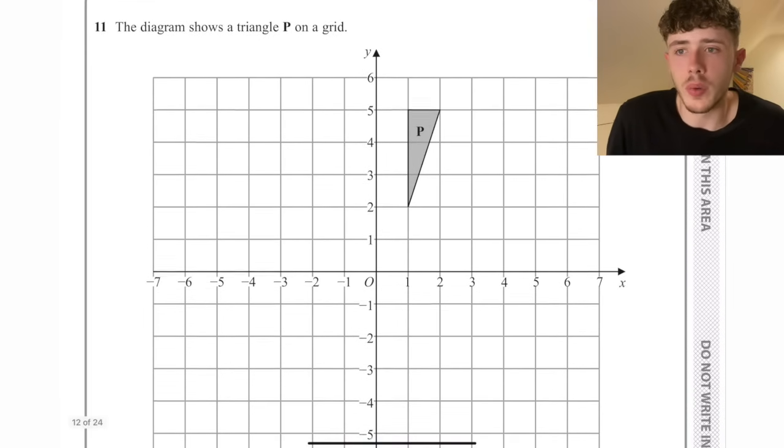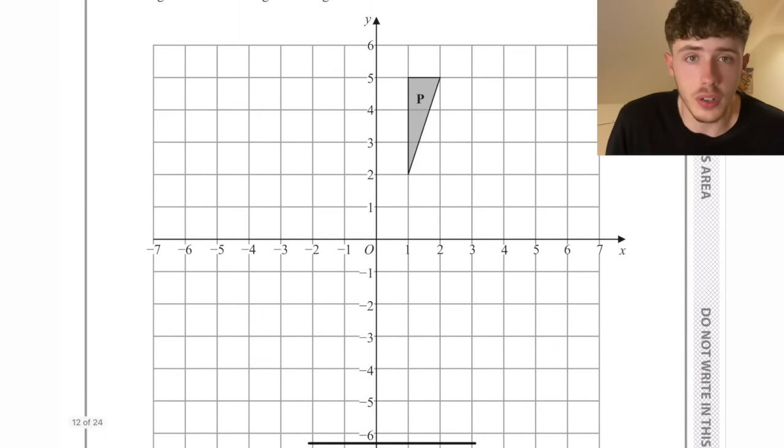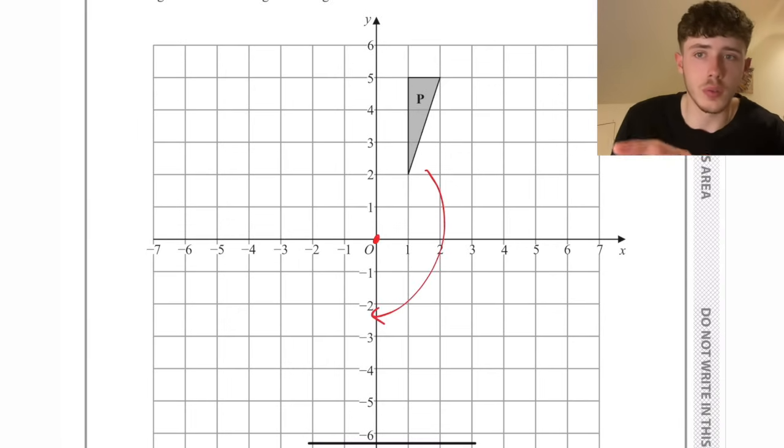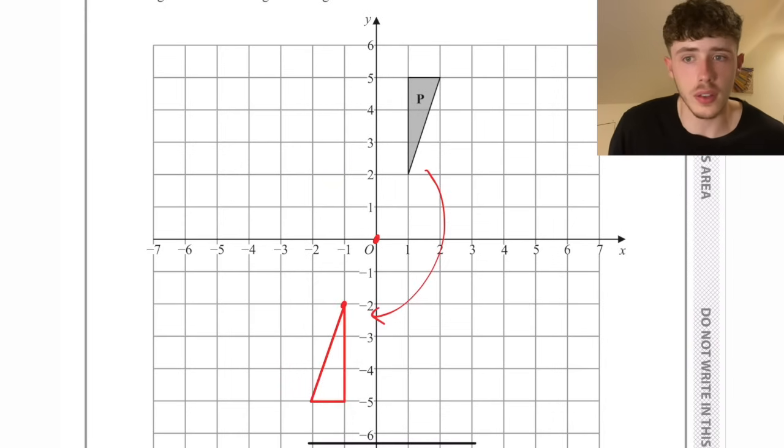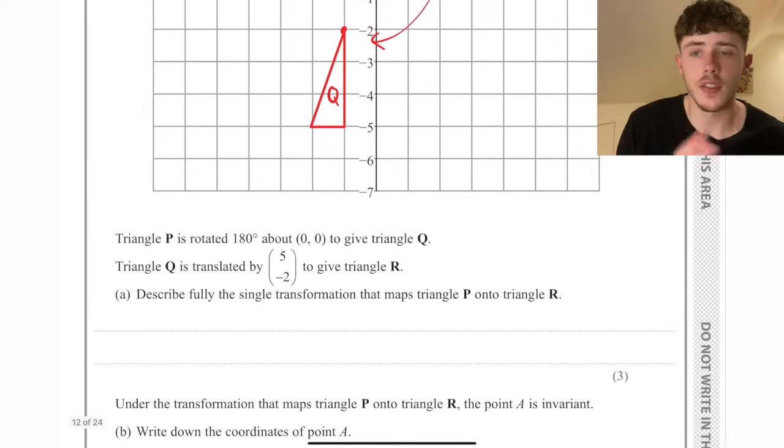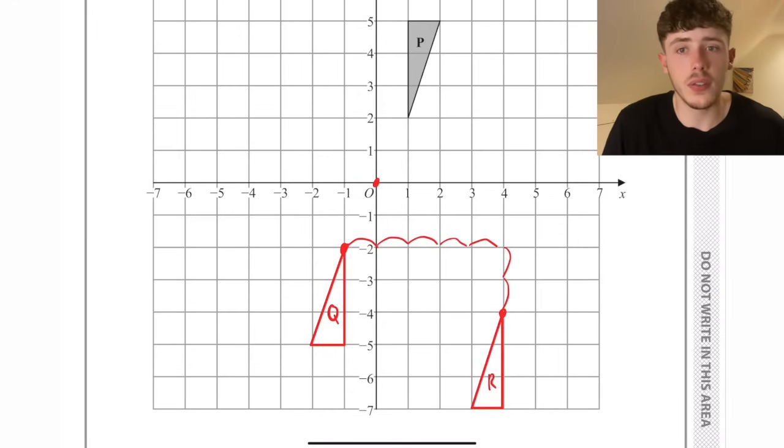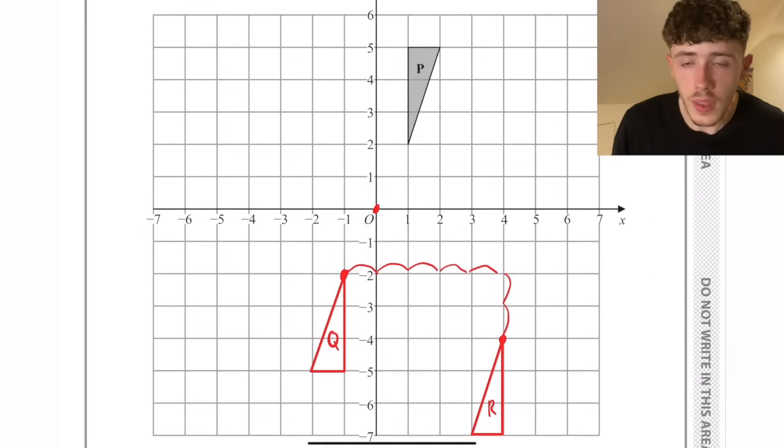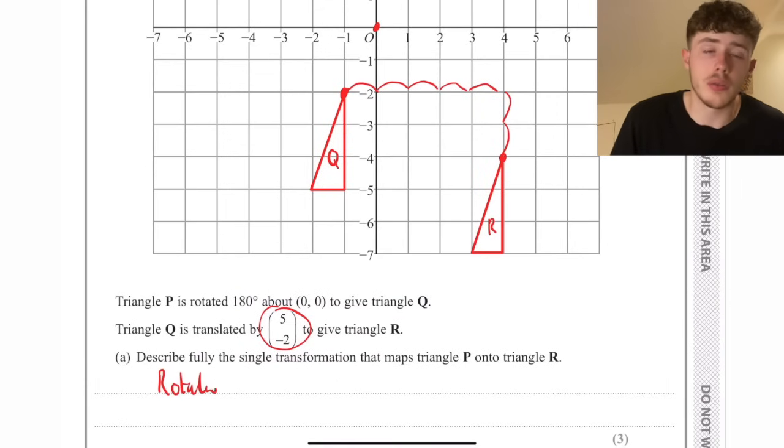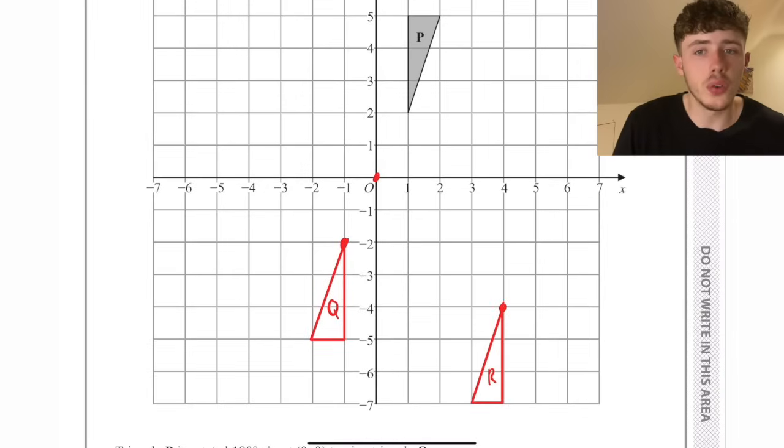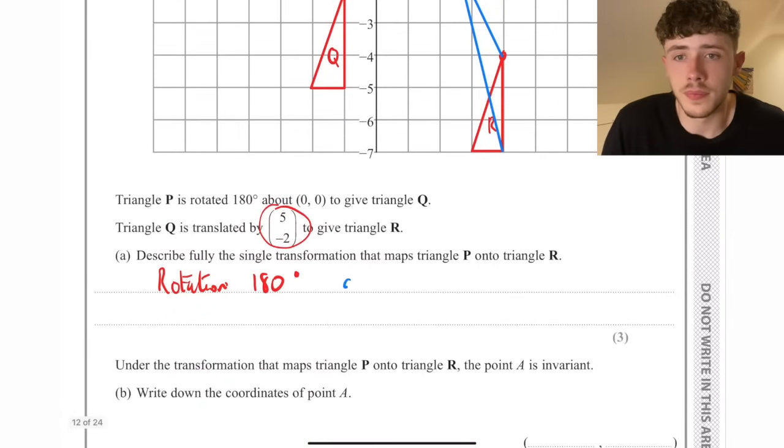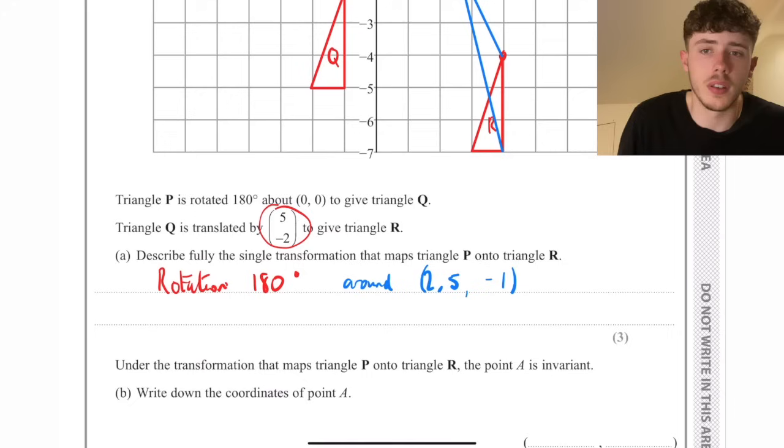Transformations, question number 11. We want to do our first transformation rotating 180 degrees around the origin. All I would do here, it goes one across and two up from the origin, so we do that the opposite side to get triangle Q. Then we translate that across the vector 5 minus 2. So 5 to the right, that'll be 1, 2, 3, 4, 5, and then 2 down. Then we just redraw the triangle there, because translation doesn't make the shape look different, it's just moving it. Now from P to R, it's a tricky one to spot, but it is a rotation of 180 degrees. I highly recommend drawing the lines just like I'm doing here, because where they intersect will be the point it's rotated around. So you would put around 2.5 minus 1.